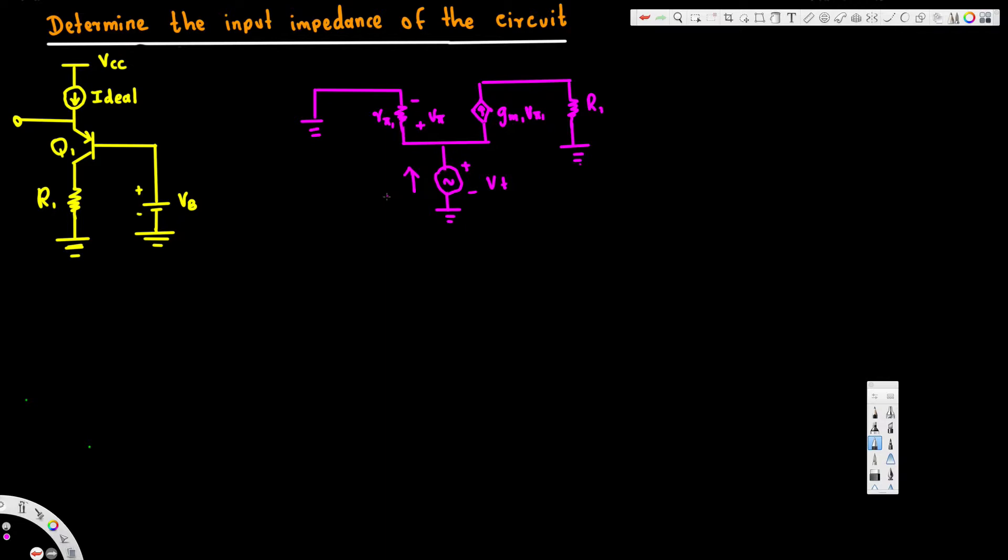And current through this is it. Now first thing is we are going to apply KCL here. You can see this current is going from negative to positive, so this is going to be negative it. KCL can be written in two ways: you can add all the current and equal to zero, or equalize entering current to exiting current. So I'm just going to add all the currents.